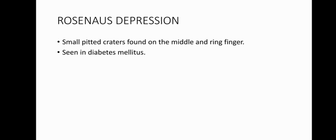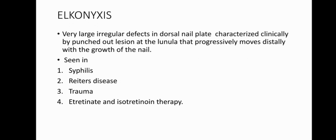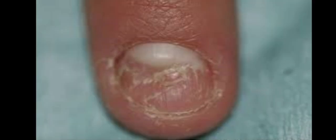Rosenau's depressions are small pitted craters found on the middle and ring fingers. They are seen in diabetes mellitus. Elchonexis refers to very large irregular defects in the dorsal nail plate, characterized clinically by punched-out lesions at the lunula that progressively move distally with the growth of the nail. They are seen in syphilis, Reiter's disease, trauma, and etretinate and isotretinoin therapy. This clinical photograph shows the presence of elchonexis.